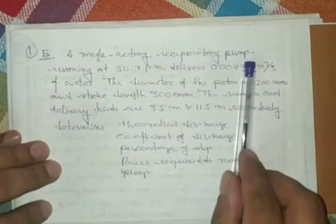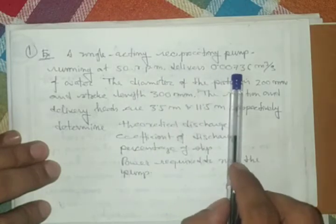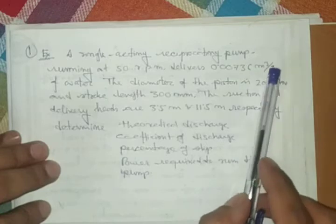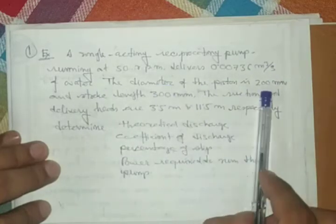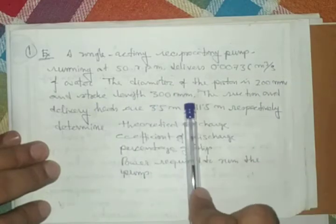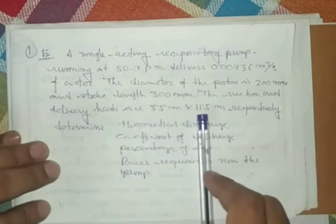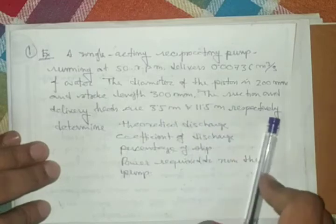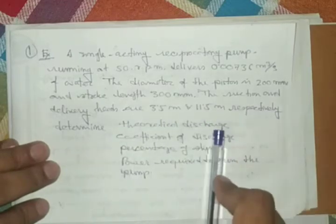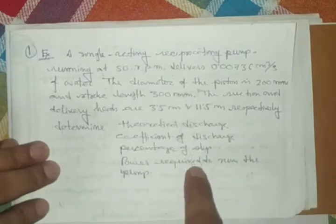A single acting reciprocating pump running at 50 RPM delivers 0.00736 m³ per second of water. Diameter of the piston is 200 mm and stroke length is 300 mm. The suction and delivery heads are 3.5 m and 11.5 m respectively. Determine theoretical discharge, coefficient of discharge, percentage of slip, and power required to run the pump. This problem is based on a single acting reciprocating pump.